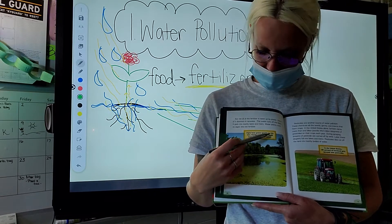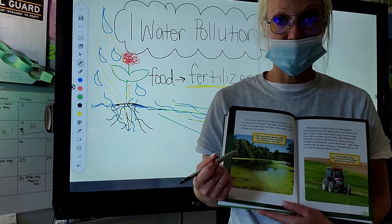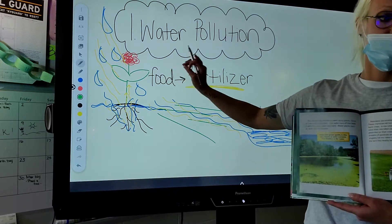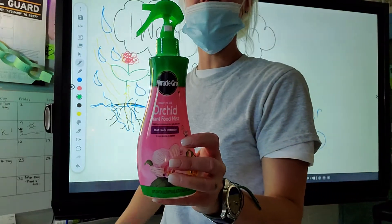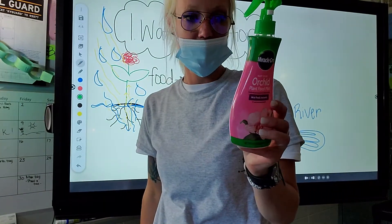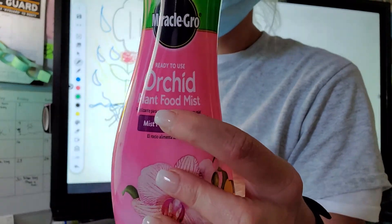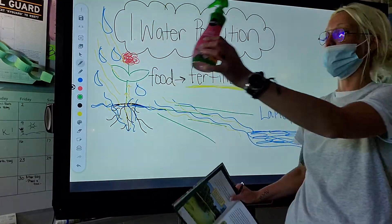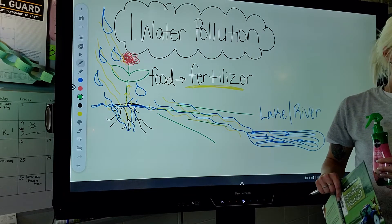Algae have grown quickly in this lake thanks to extra nutrients from fertilizer in the water. This fertilizer acts as food, just like this orchid plant food mist we have up in the window. It's plant food, and it's got fertilizer in it.